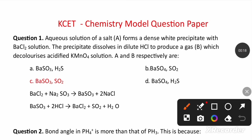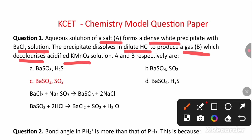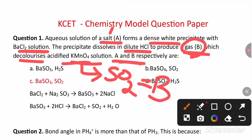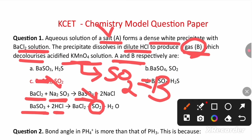The first question: aqueous solution of salt A forms a dense white precipitate with barium chloride solution. The precipitate dissolves in dilute HCl to produce gas B which decolorizes acidified potassium permanganate solution. The gas which decolorizes potassium permanganate is sulfur dioxide, so B is SO2. Salt A is sodium sulfite, which on reacting with barium chloride produces white barium sulfite. This dissolves in dilute HCl to produce SO2. So A is sodium sulfite and B is sulfur dioxide.